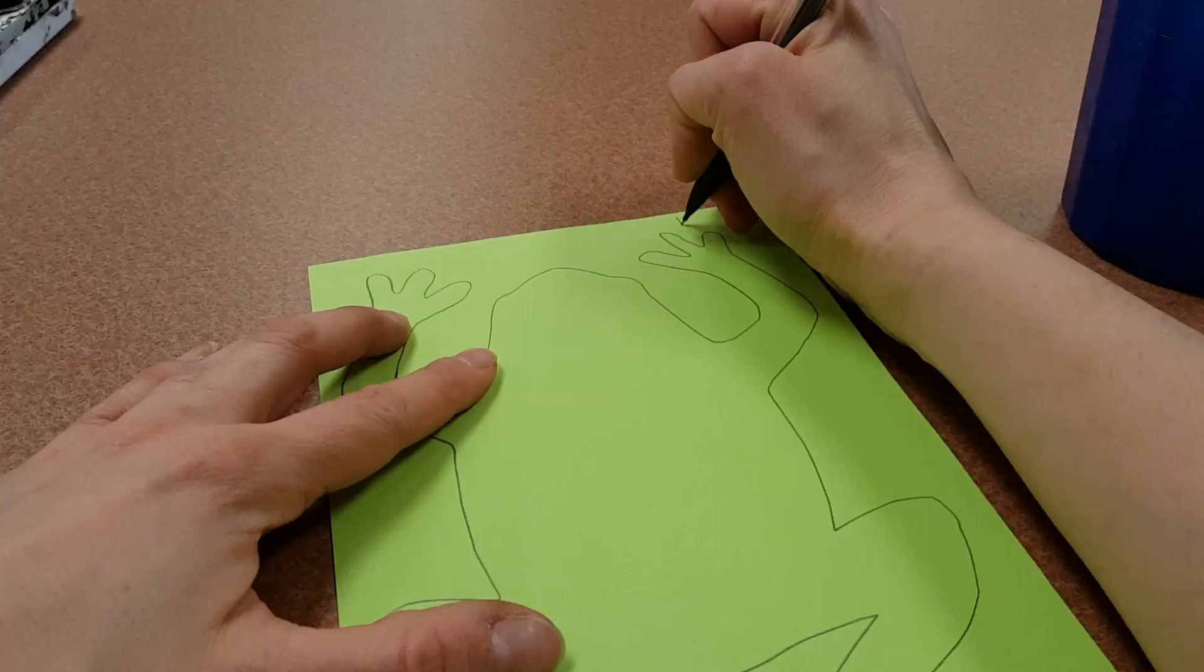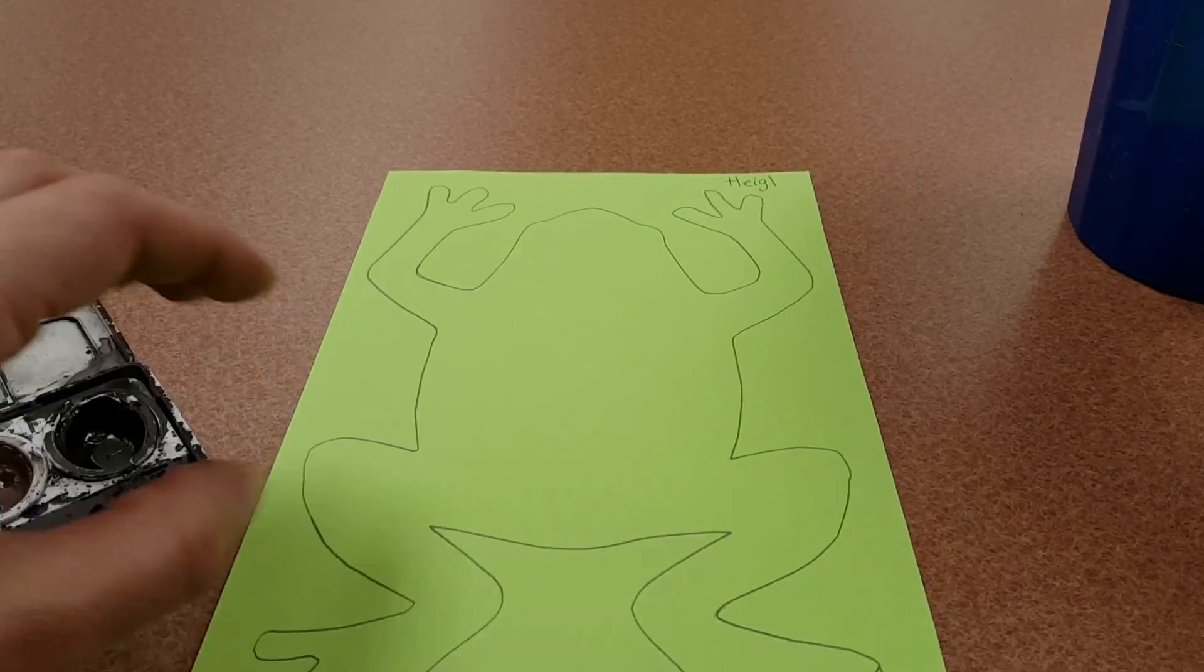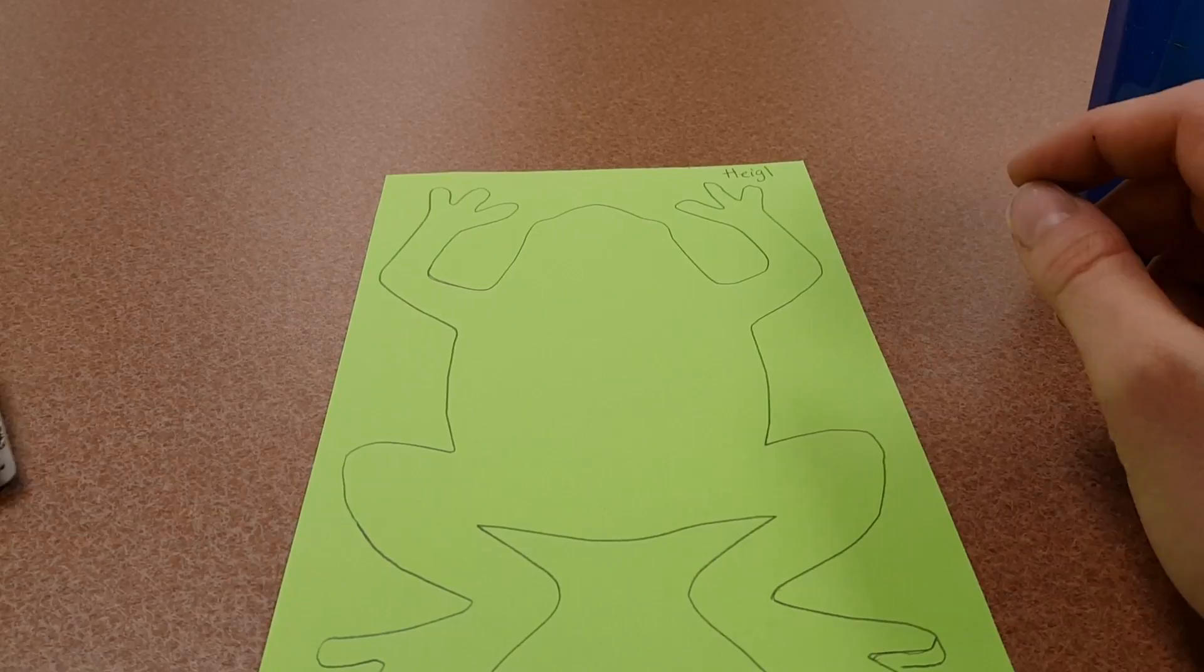I also need my name on here before I forget. Now if we're not cutting these yet, we will cut them later. We want to get the paint done today. So the poison dart frog has black decoration. So that's what we are adding.